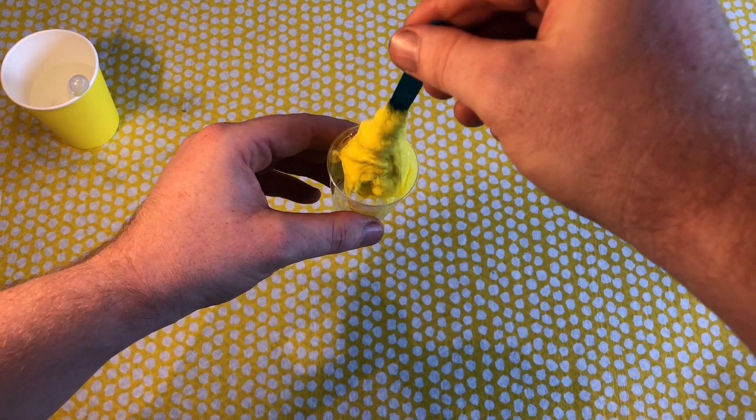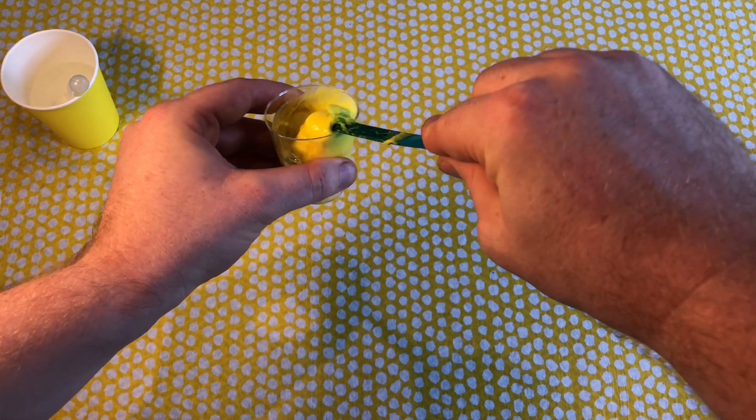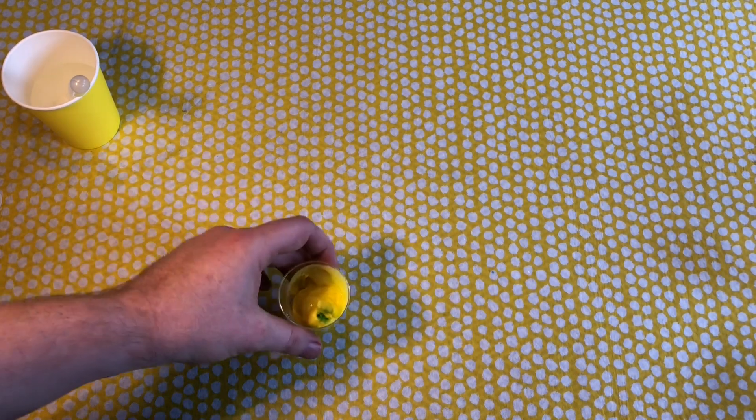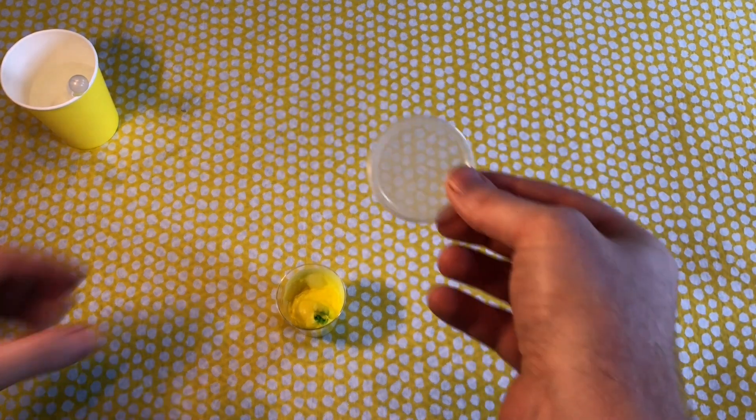Once you think your slime is at the right consistency, carefully take your stick out without touching the slime. The best way to do this is to scrape the stick along the side. Then let your slime set for about 5 to 10 minutes.